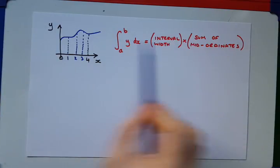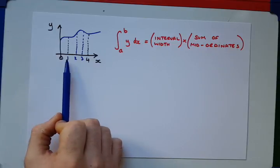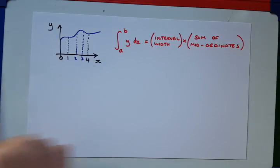Okay, so there we've got what our interval width is. We've split it up into 4 equal intervals, each of width 1. 0 to 1, 1 to 2, 2 to 3, and 3 to 4.